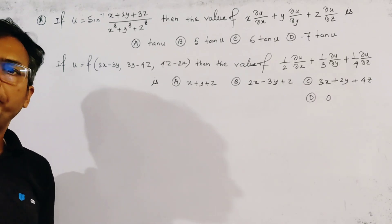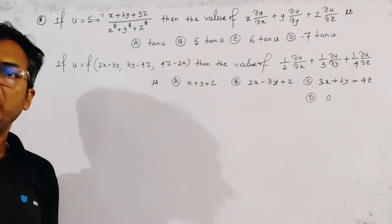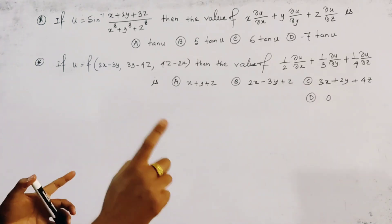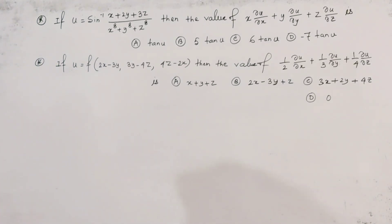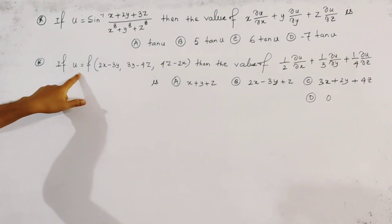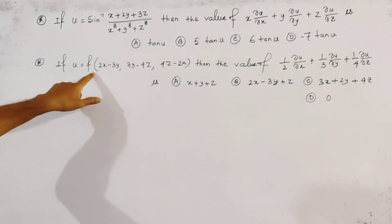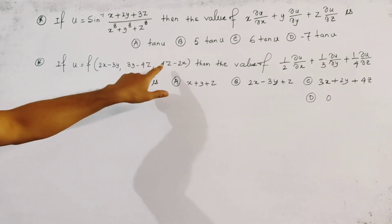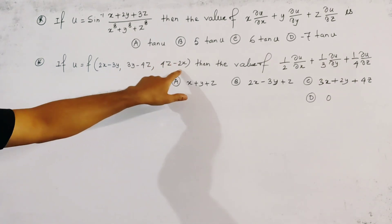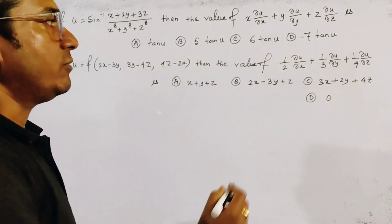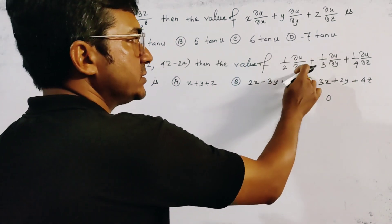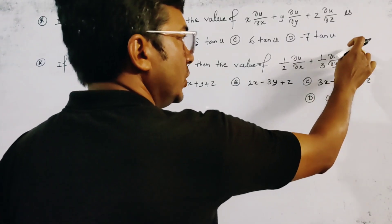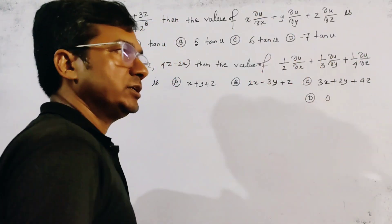Two problems from partial differentiation and we start from the last one. If u is f of (2x minus 3y), (3y minus 4z), (4z minus 2x), then we need to find the value of ½ ∂u/∂x plus ⅓ ∂u/∂y plus ¼ ∂u/∂z, which is given by four options.